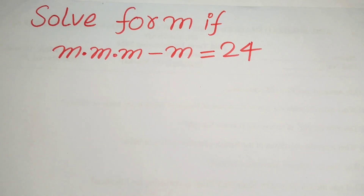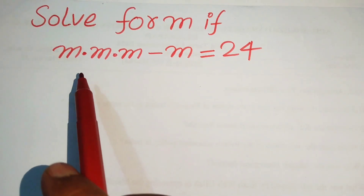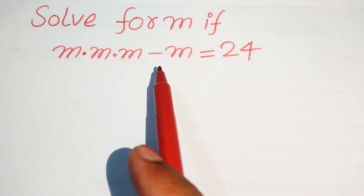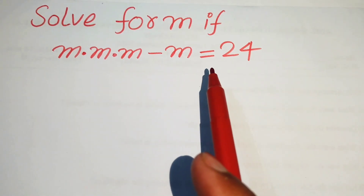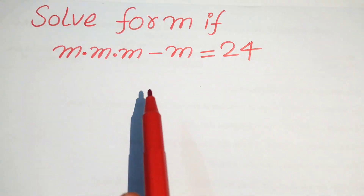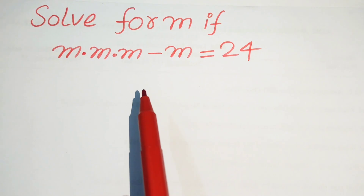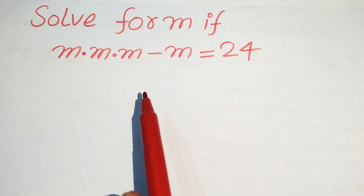Hello everyone, welcome to solve this nice math algebra problem. Here we have m times m times m minus m equals to 24, and we solve this problem for the values of m.